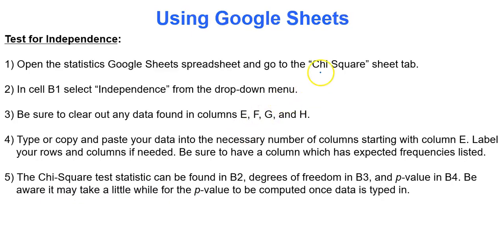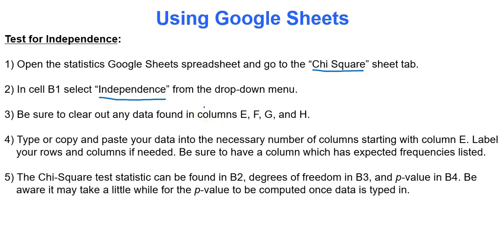To do a test for independence, we'll go to the chi-squared tab in Google Sheets, select independence for our type of test, and then type in our contingency table into the spreadsheet. It'll give us our p-value, our test statistic, and also degrees of freedom.